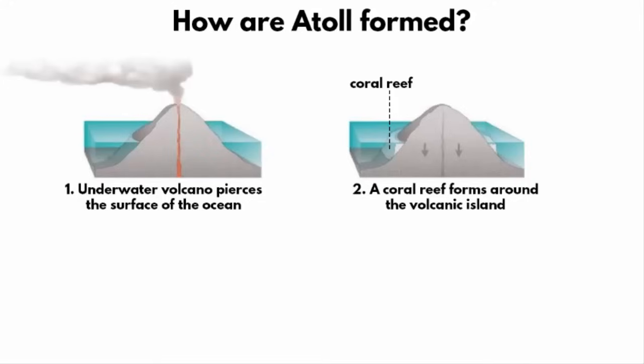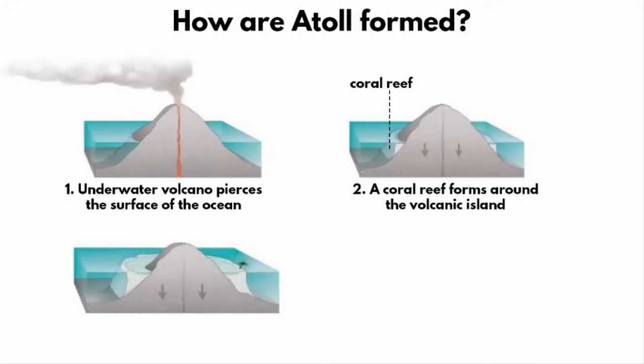Over millions of years, the volcanic island erodes and sinks to the sea floor. This process is called subsidence. The sea mount erodes into the sea and its top portion is made flat by the constant pounding of powerful ocean waves.